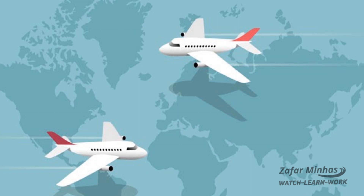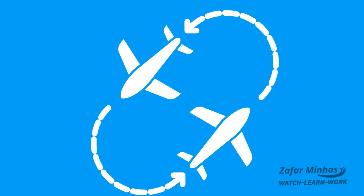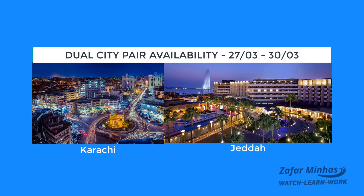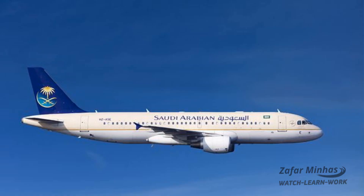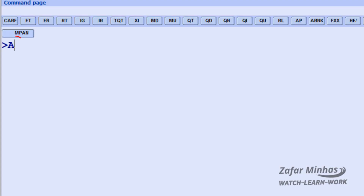The Dual City Pair transaction allows you to simultaneously check availability for two different journeys with just one entry. It is usually used to quickly display a return trip. Our passenger wanted to know the availability between Karachi and Jeddah on March 27th and returning on March 30th by Saudi Arabian Airlines. Enter the AN transaction code.